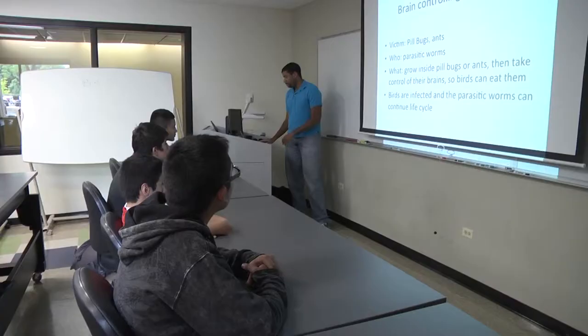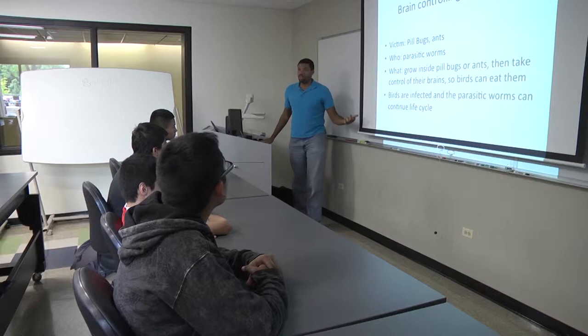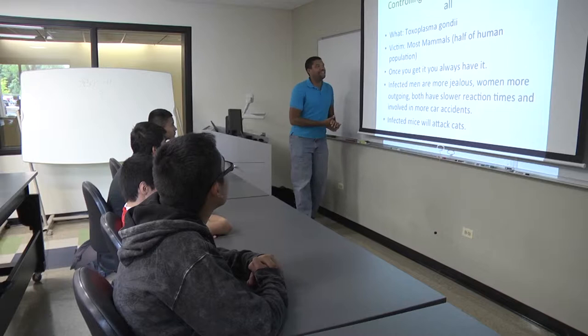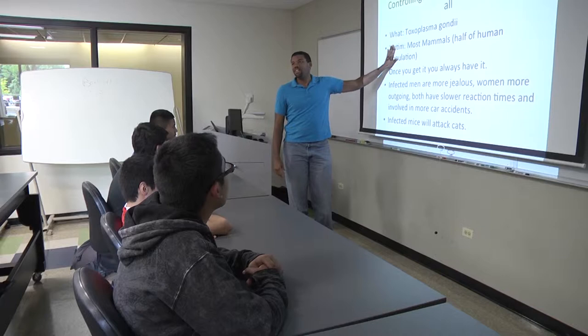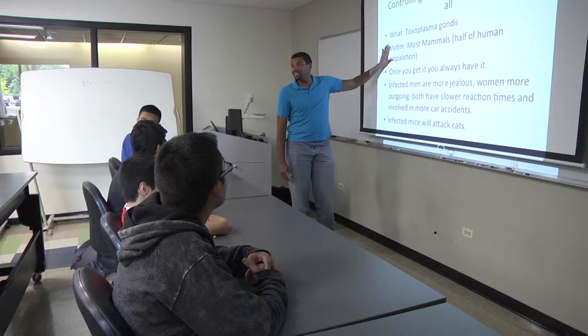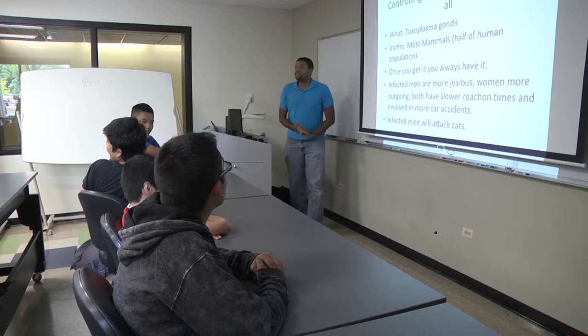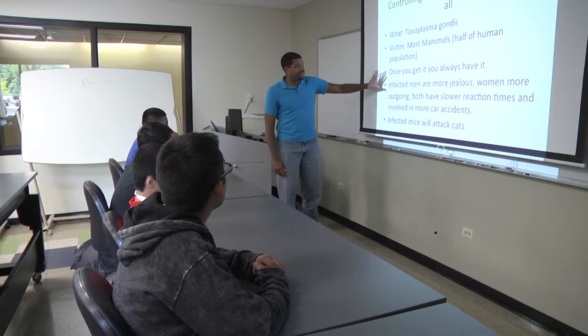What about humans? Can our brains be controlled by anything? Of course they can — Toxoplasma gondii. Most mammals are infected by it. Half of the human population is infected with Toxoplasma. How many people have cats? If you have cats, you're probably infected with Toxoplasma. Once you get it, you always have it. Research shows that infected men are more jealous, women are more outgoing, and both have slower reaction times and are involved in more car accidents.